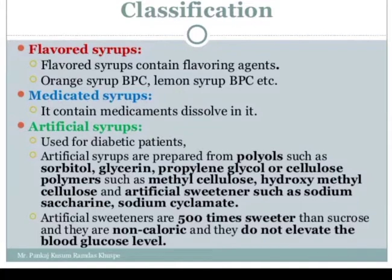Artificial syrup is used for diabetic patients. It is prepared from polyols such as sorbitol, glycerin, and propylene glycol, or from cellulose polymers such as methyl cellulose and hydroxy methyl cellulose. Artificial sweeteners such as sodium saccharin and sodium cyclamate are also used.